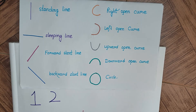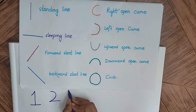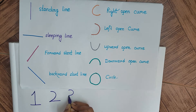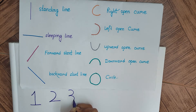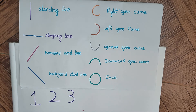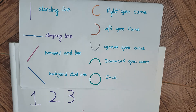Now number 3. Let us see how we can write number 3. First a small left open curve, then another left open curve. Two left open curves, as you can see, forms our number 3. Now we will write number 4.